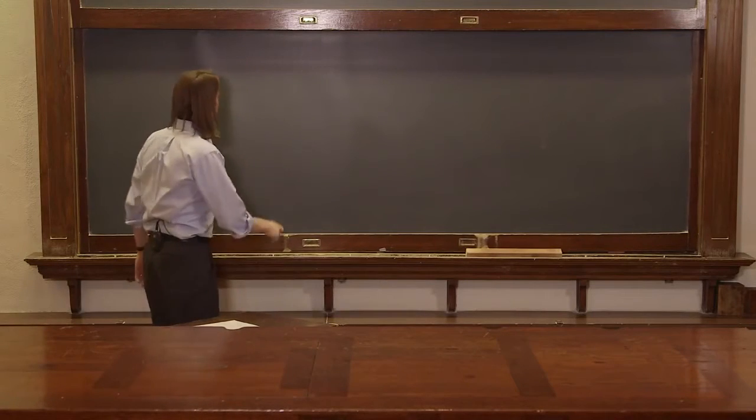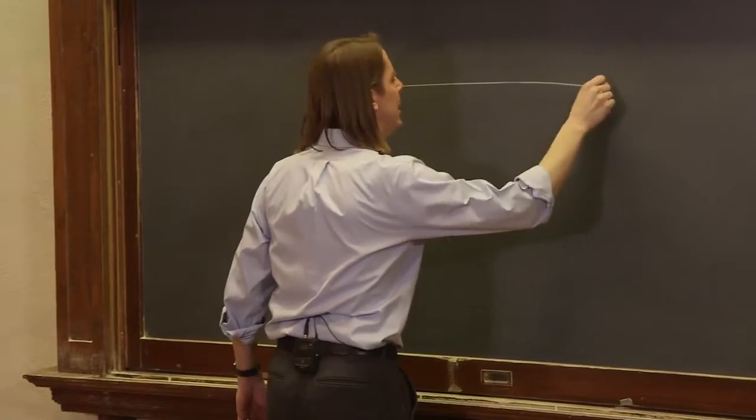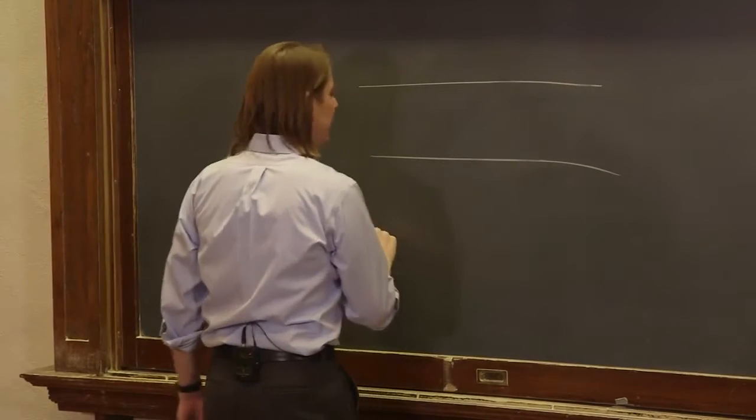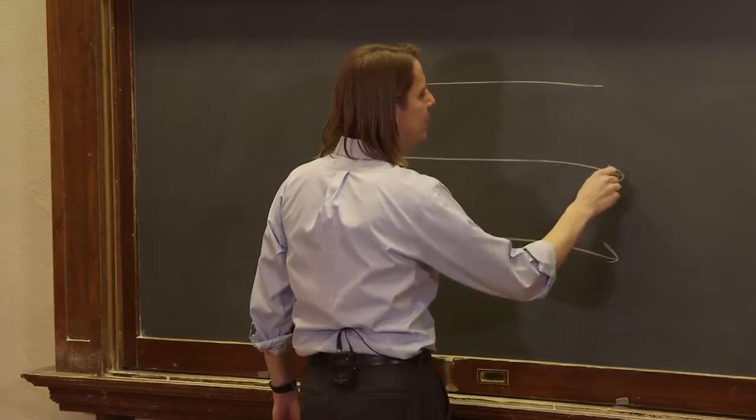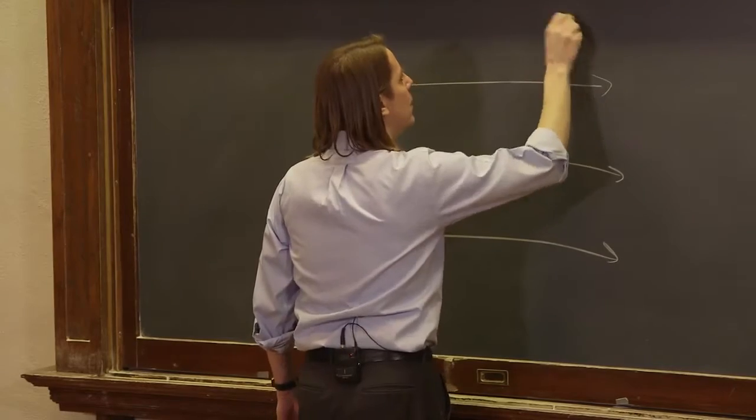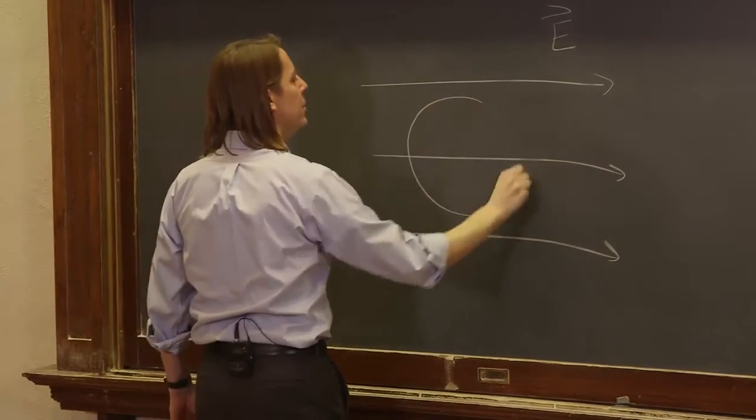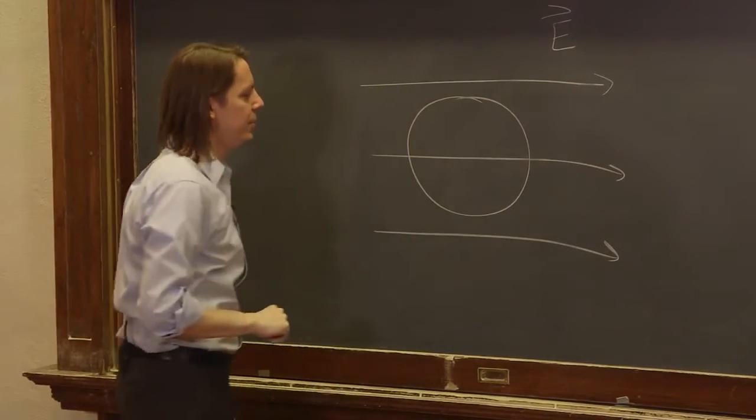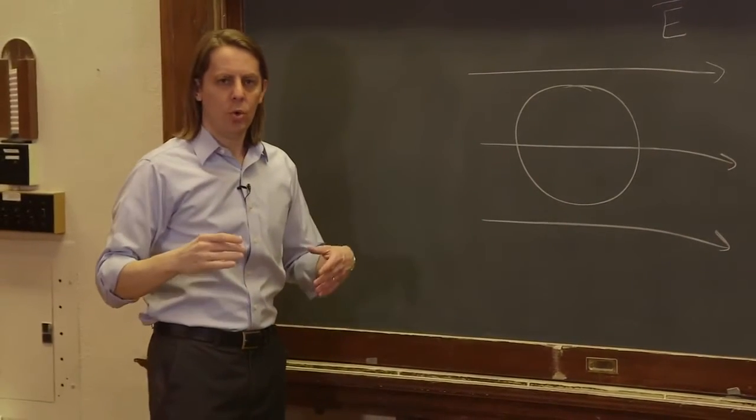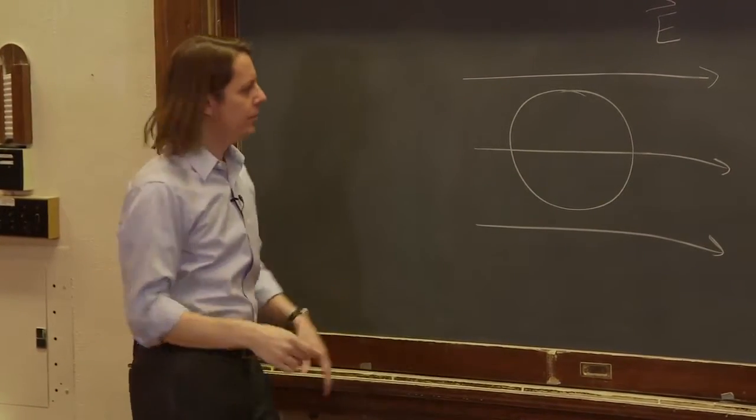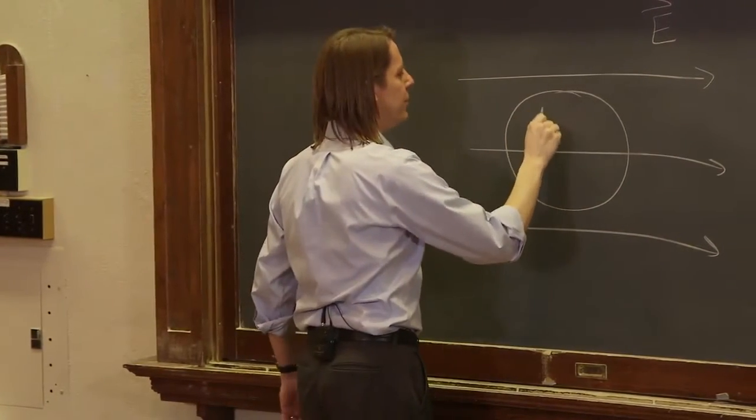A question that comes up fairly often in electricity and magnetism is, I have an electric field, maybe something like this, and I put in a material, maybe a dielectric, and you might ask, what's the new field? What does it do to the field?